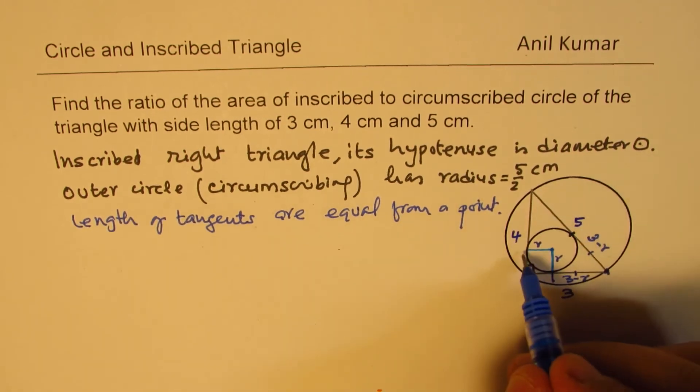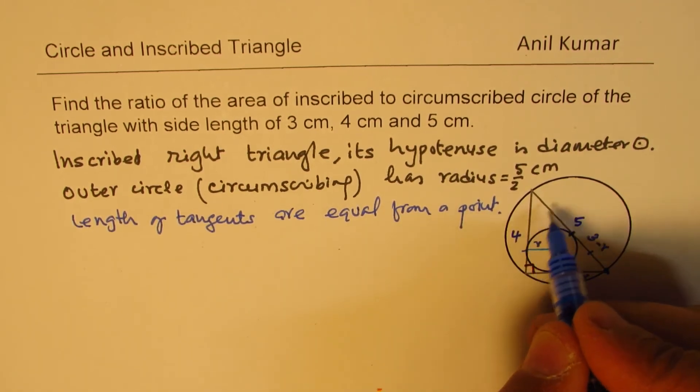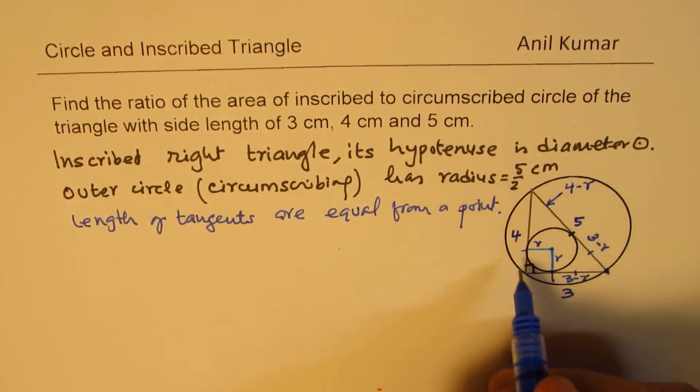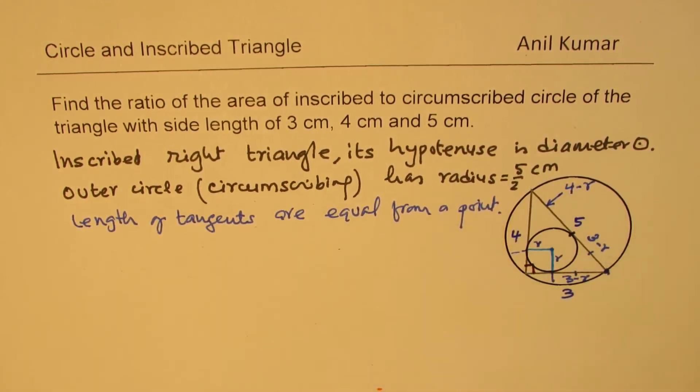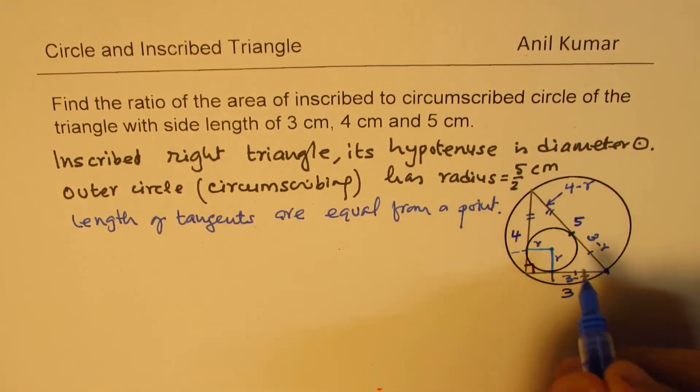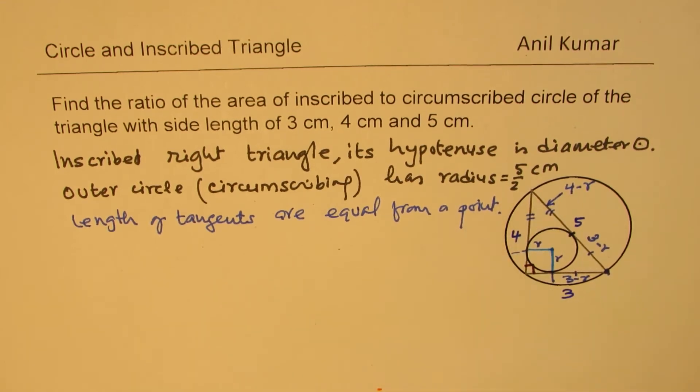Similarly, the other length is 4 minus r. So this will be 4 minus r, since 4 less r. So this length will be equal to the other length, which is 4 minus r.